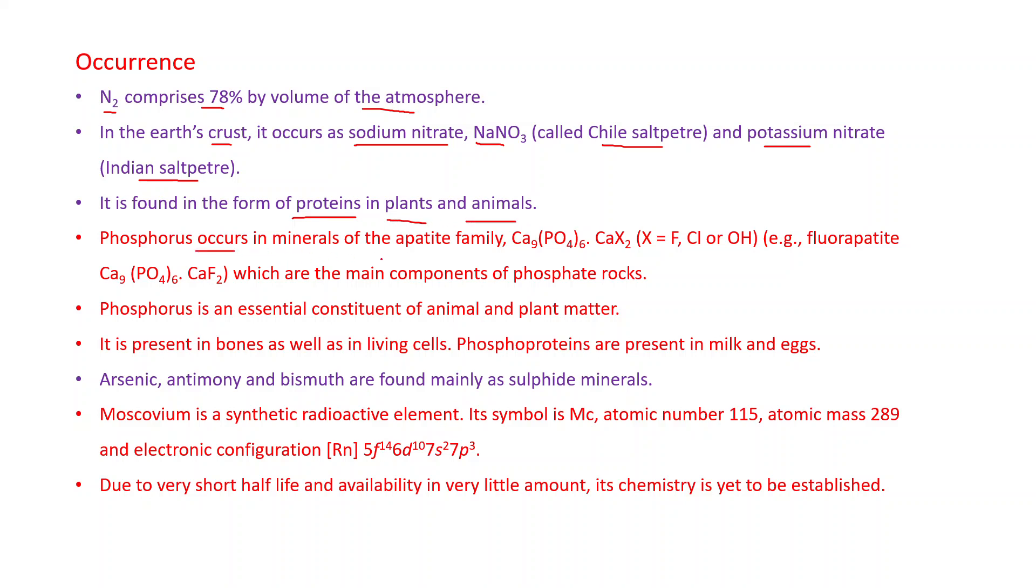Phosphorus occurs in minerals of the apatite family, Ca9(PO4)6CaX2, where X may be F, Cl, or OH. For example, fluorapatite Ca9(PO4)6CaF2, which are the main components of phosphate rocks. Phosphorus is an essential constituent of animal and plant matter. It is present in bones as well as in living cells. Phosphoproteins are present in milk and eggs.